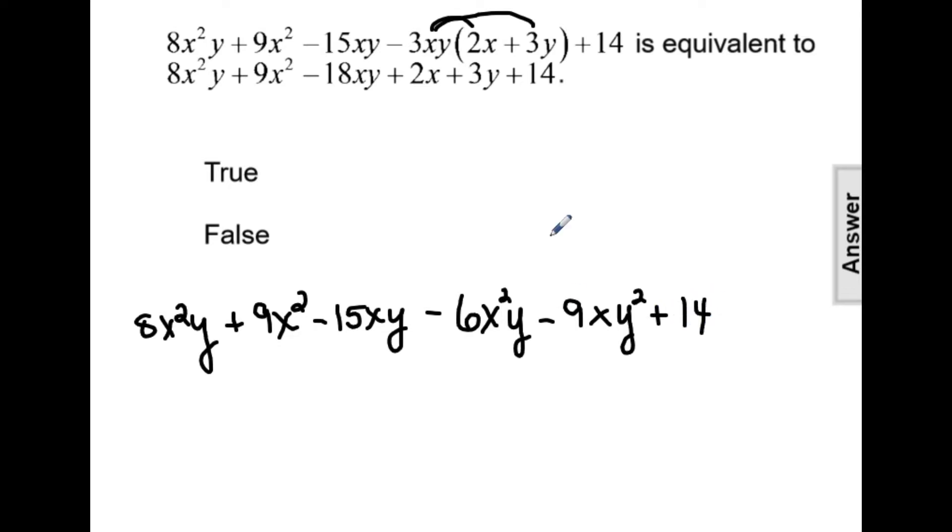We now can start to combine like terms. Remember, like terms have to have the same variables raised to the same power. So here 8x squared y is like terms with negative 6x squared y.